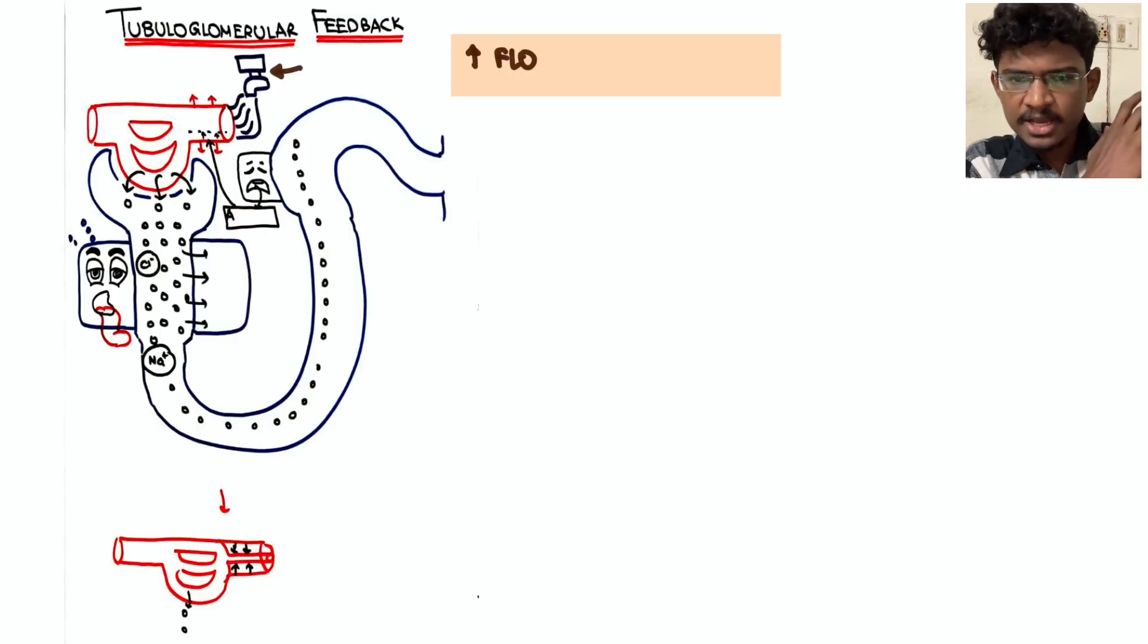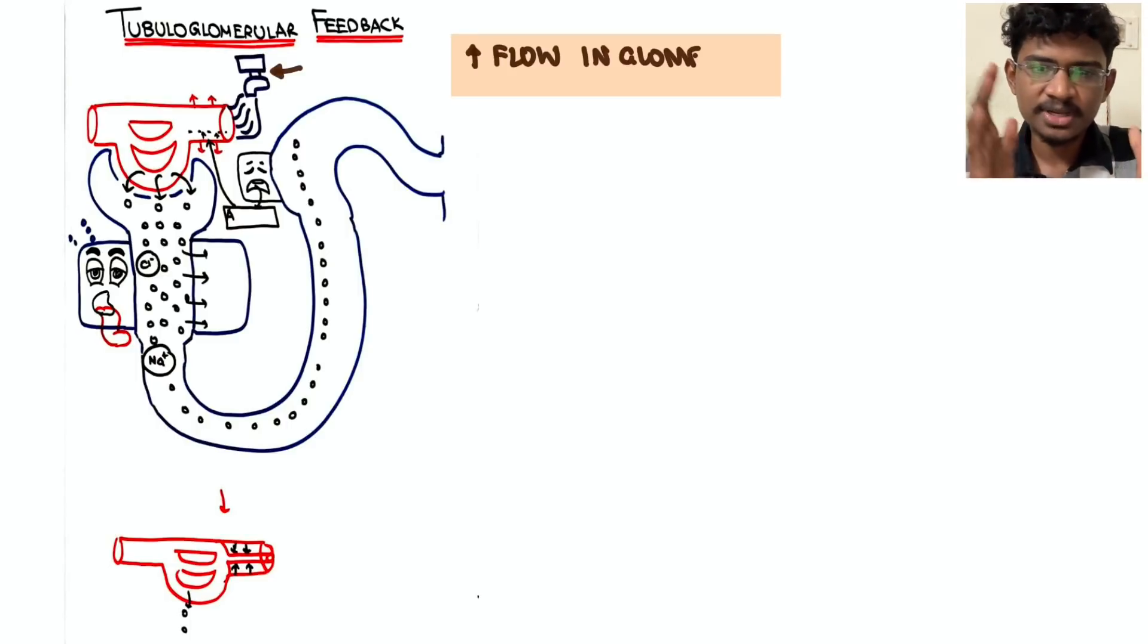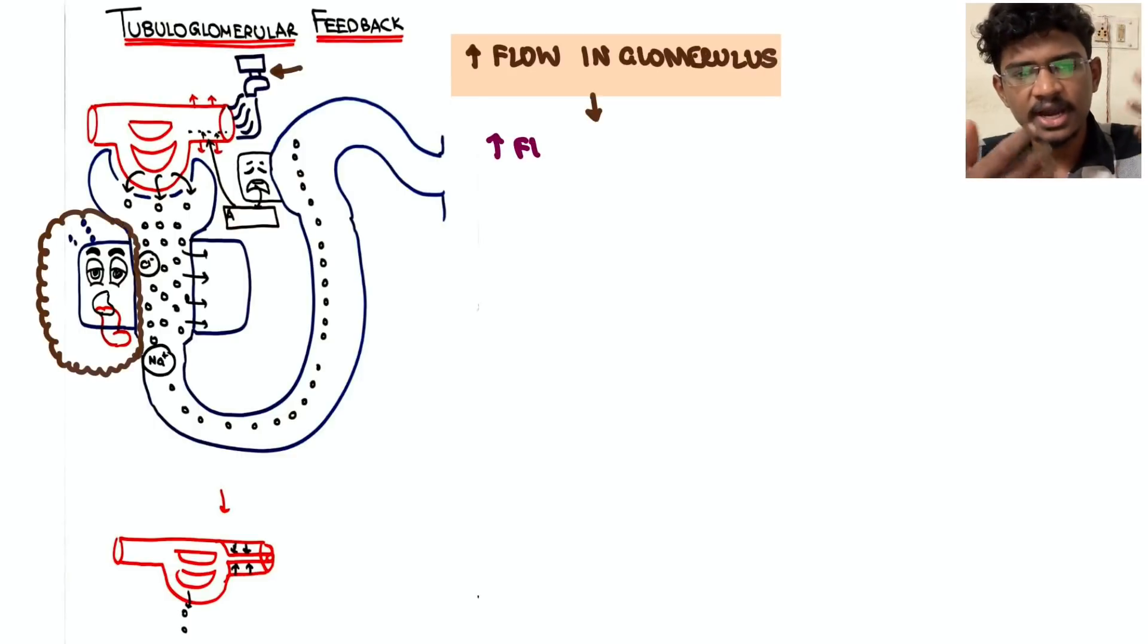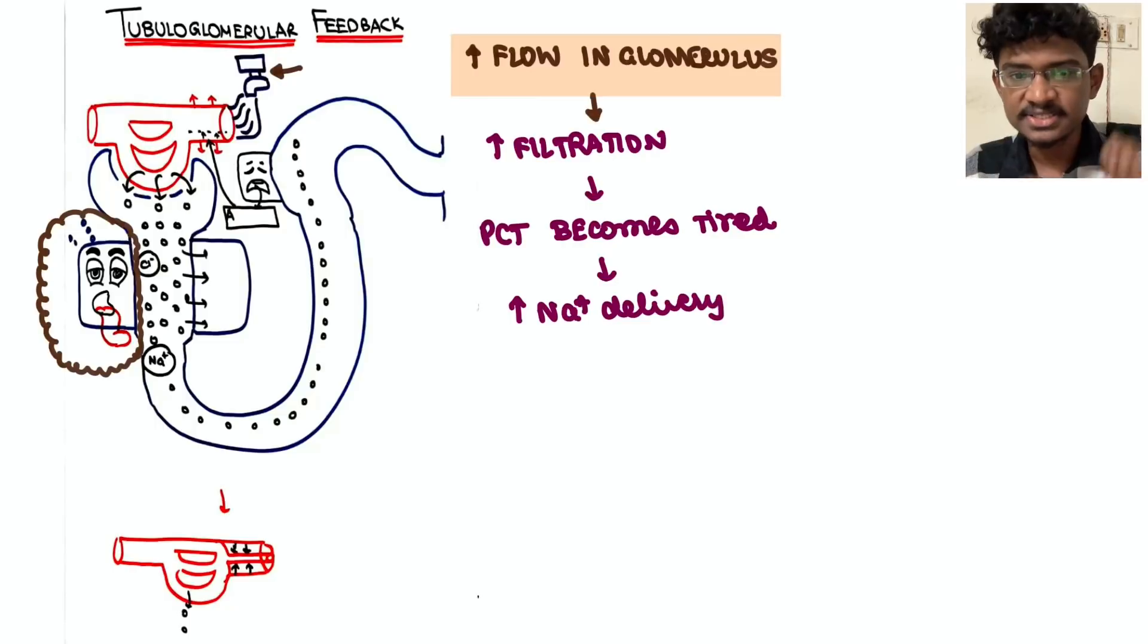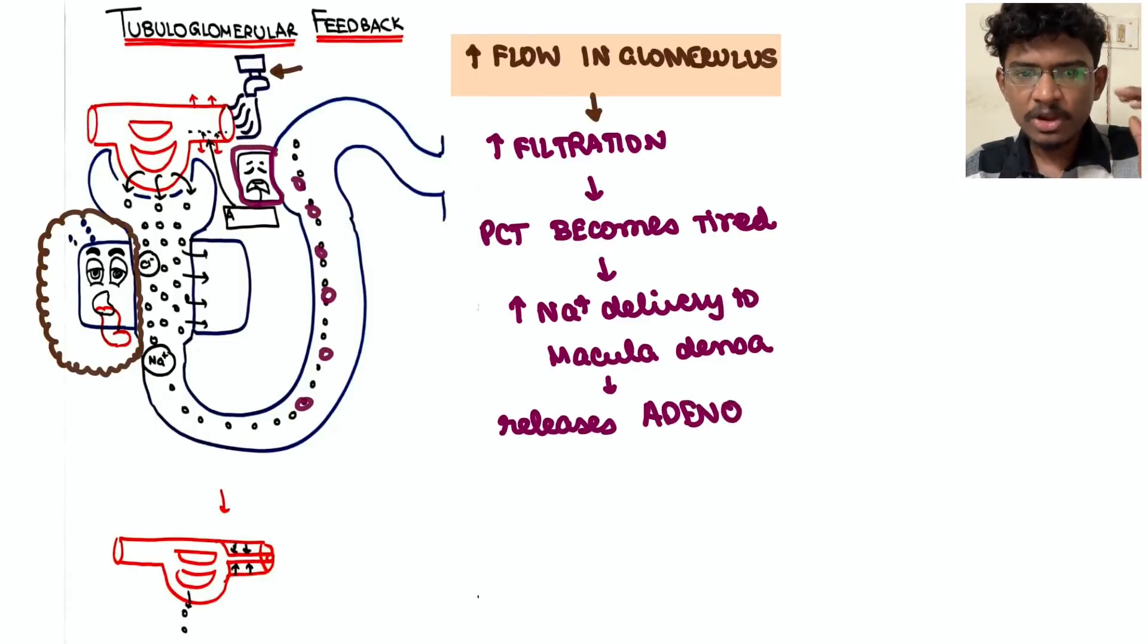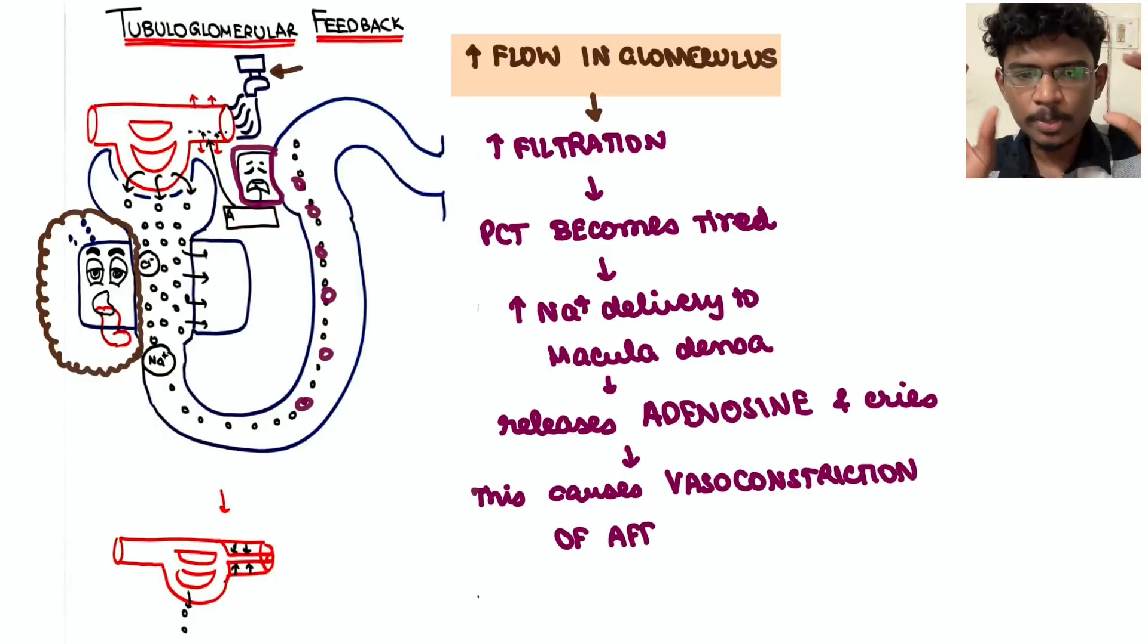See here, same increased blood flow is happening, increased filtration will automatically will be happening. So already the overworked cell proximal convoluted tube, now is exposed to too much of solutes - sodium chloride - it can't absorb it, leaves it off in tiredness. So this excess sodium reaching the macula densa, which is a thick ascending loop part, finally there this macula densa seeing this much sodium starts to cry by releasing adenosine. This adenosine acts on the afferent arteriole causing vasoconstriction.